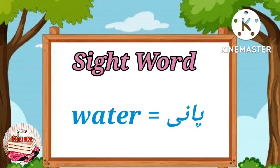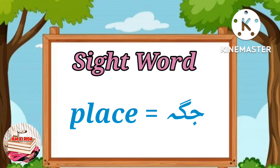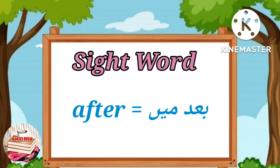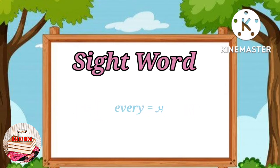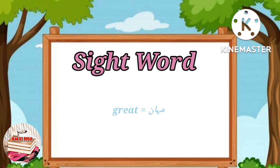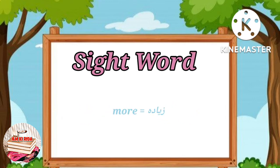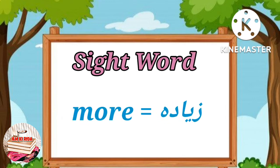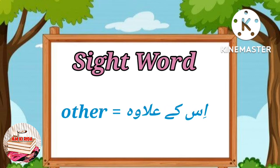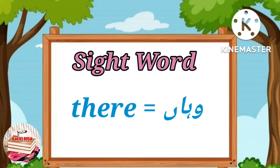Water - Meaning: पानी. Place - Meaning: जगह. After - Meaning: बाद में. Every - Meaning: हर. Great - Meaning: महान.